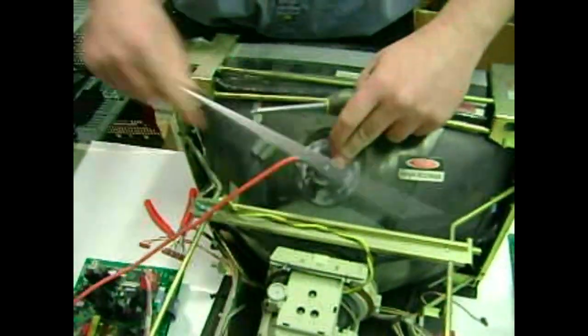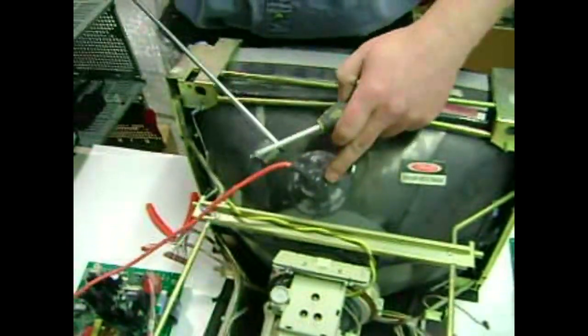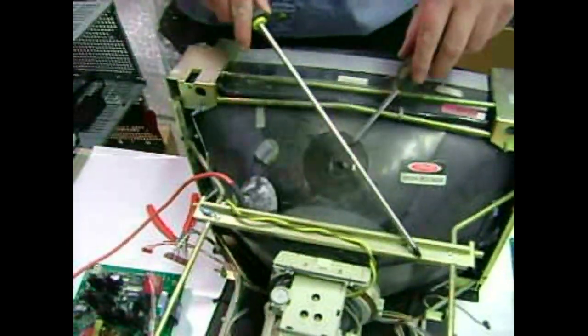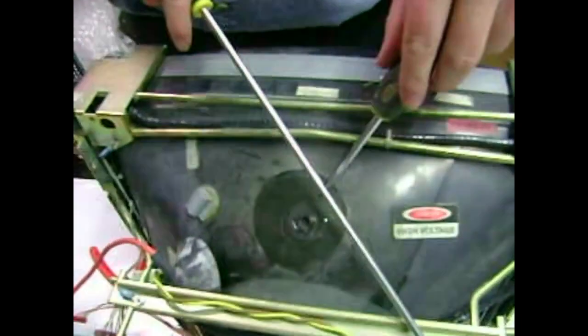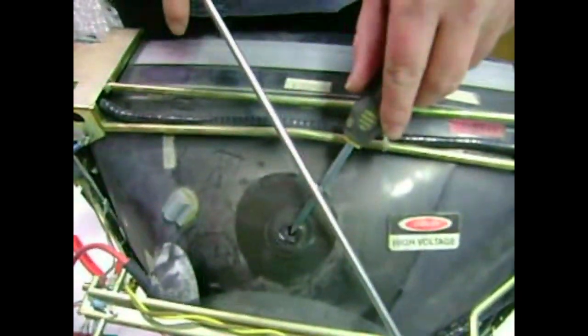When this is connected, you use the two-screwdriver method: holding one screwdriver onto the frame, then slide the other screwdriver underneath and short out the inside.